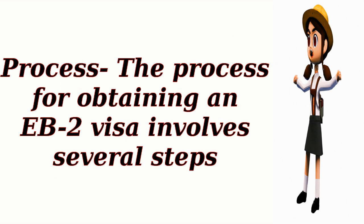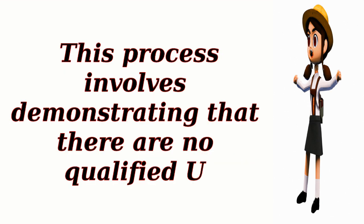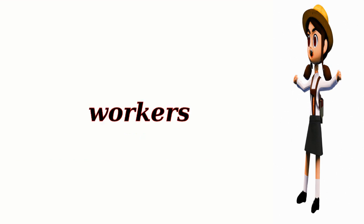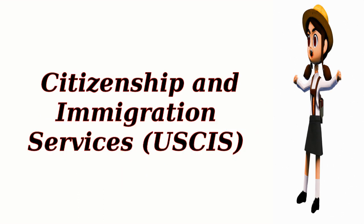The process for obtaining an EB-2 visa involves several steps. First, the employer must complete a labor certification process through the Department of Labor (DOL). This process involves demonstrating that there are no qualified U.S. workers available for the position and that hiring a foreign worker will not negatively impact the wages and working conditions of U.S. workers. Once the labor certification is approved, the employer can file an immigrant petition, Form I-140, with the U.S. Citizenship and Immigration Services (USCIS).